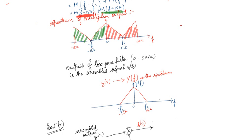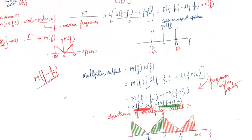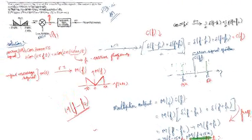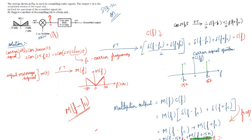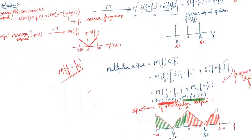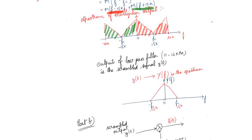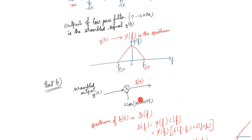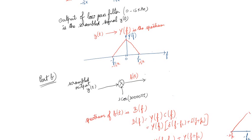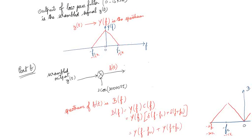Now for part B, they ask us to suggest a method to de-scramble y(t) to obtain m(t). We need to reverse the process. Using synchronous detection, what we do is multiply the scrambled output y(t) again with the carrier 2cos(30000πt). The output we name b(t). In the frequency domain, b(f) is the product of Y(f) and c(f).